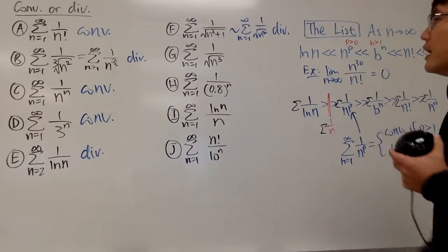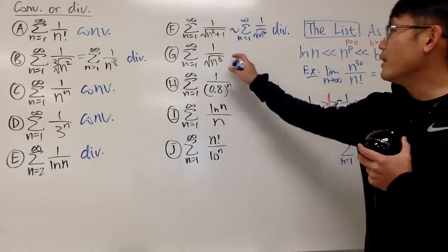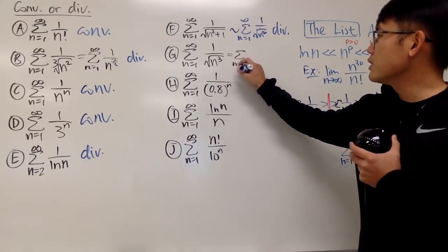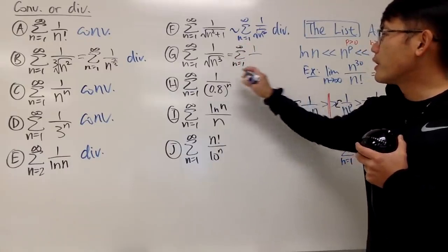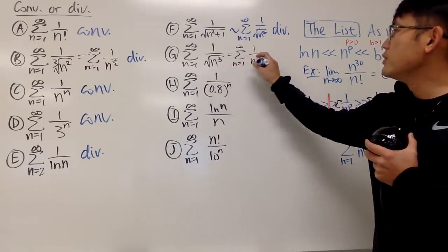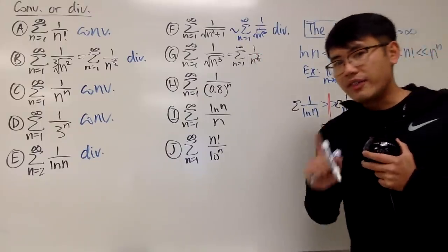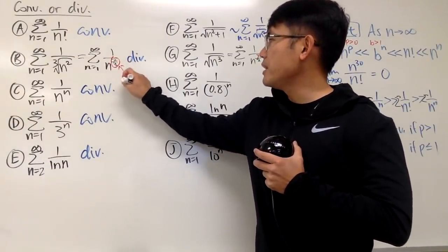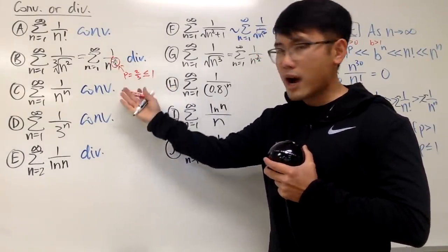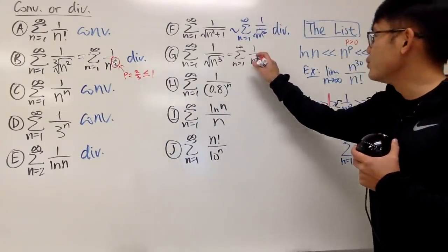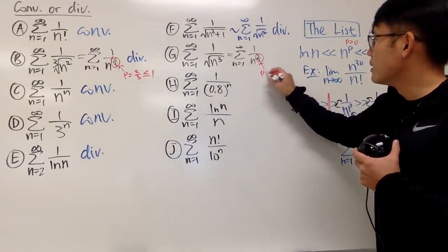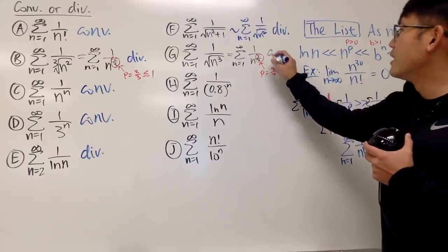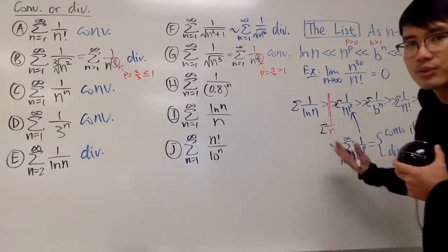For the series of 1 over √(n³): this is the same as 1 over n^(3/2). Earlier we had p = 2/3 which was less than 1 and diverged. Now p = 3/2, which is greater than 1, so this converges thanks to the p-series.